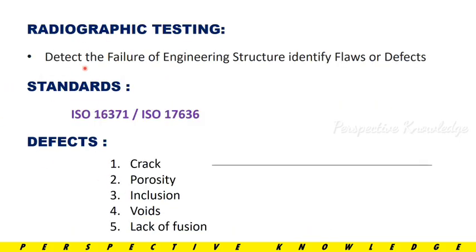Radiographic Testing is used to detect the failure of engineering structures and identify flaws or defects. For standards, we follow ISO 16371 and ISO 17636 — two types of standards for Radiography Inspection.